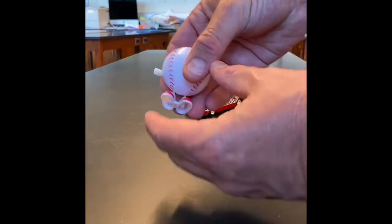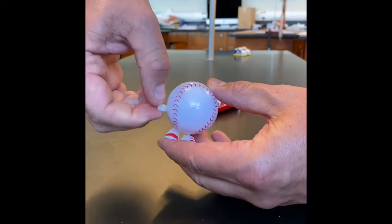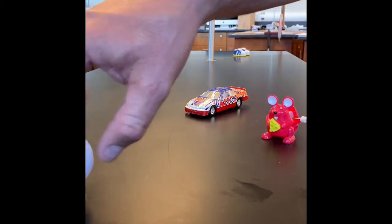First we'll take a look at the baseball. The baseball has a key on the side, and when you twist the key and release the ball, it hops along the table.